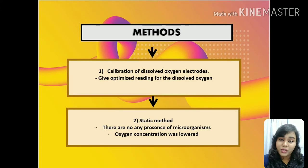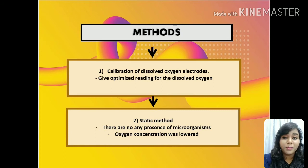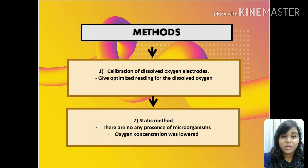As for the methods, there are two steps to be followed. Firstly would be the calibration of the dissolved oxygen electrode. This is done because after the sterilization, it will give the optimized reading for the dissolved oxygen, and the calibration is then performed under process control. The second step is the static gassing-out method, during which the oxygen concentration of the solution is lowered by static gassing-out with nitrogen gas.